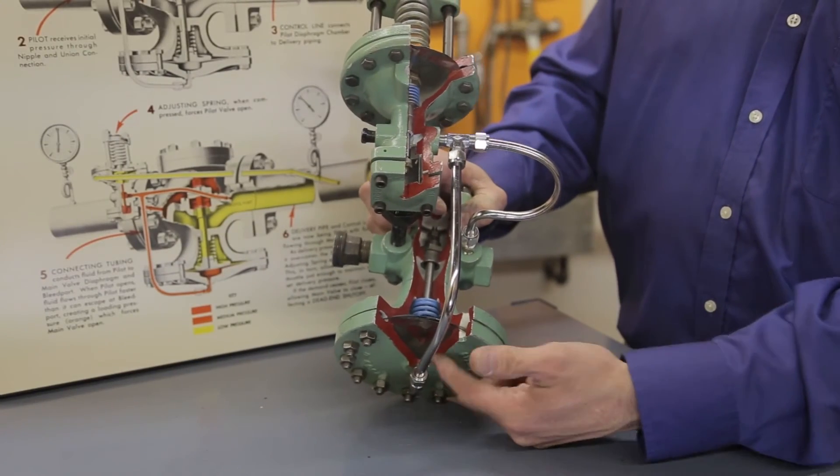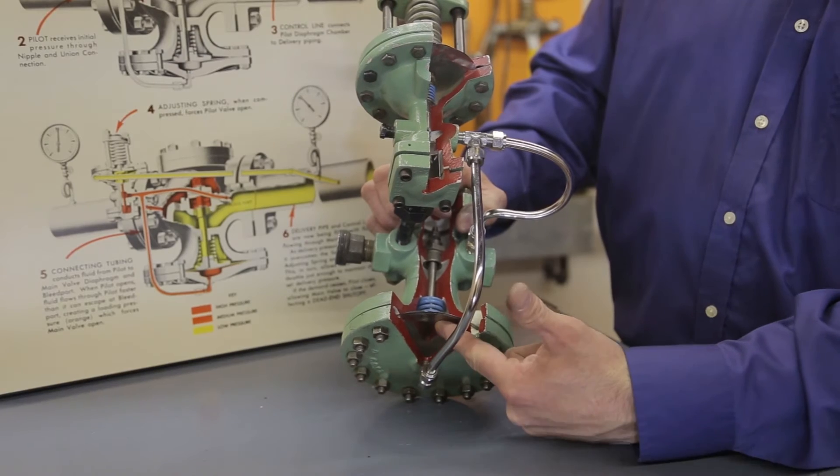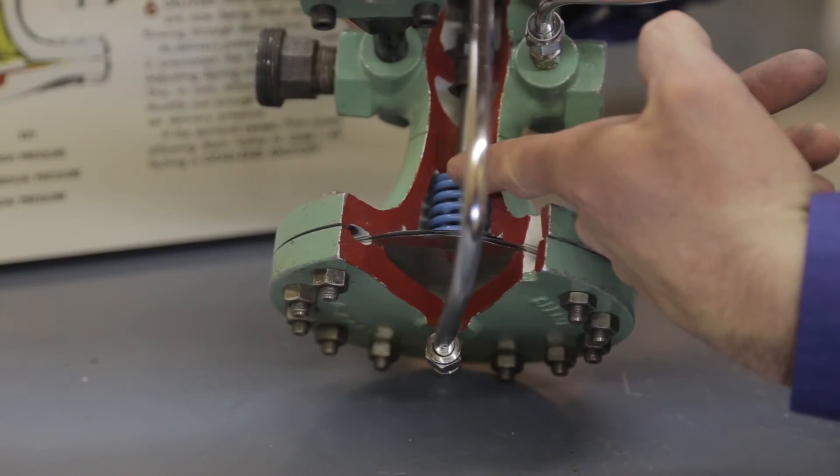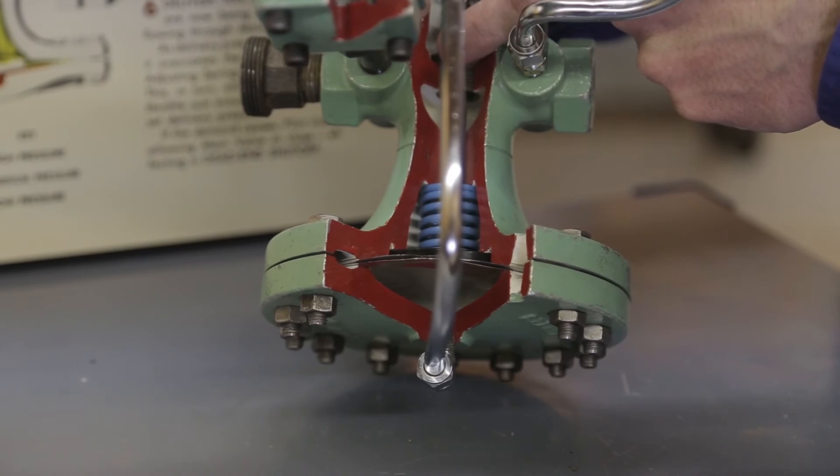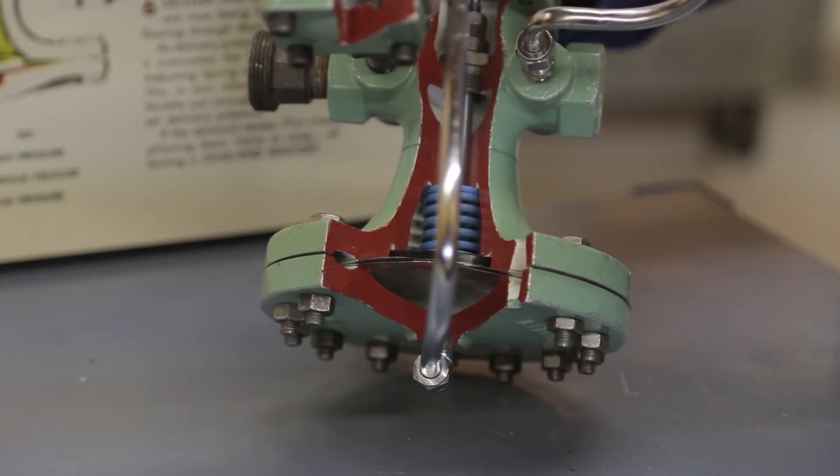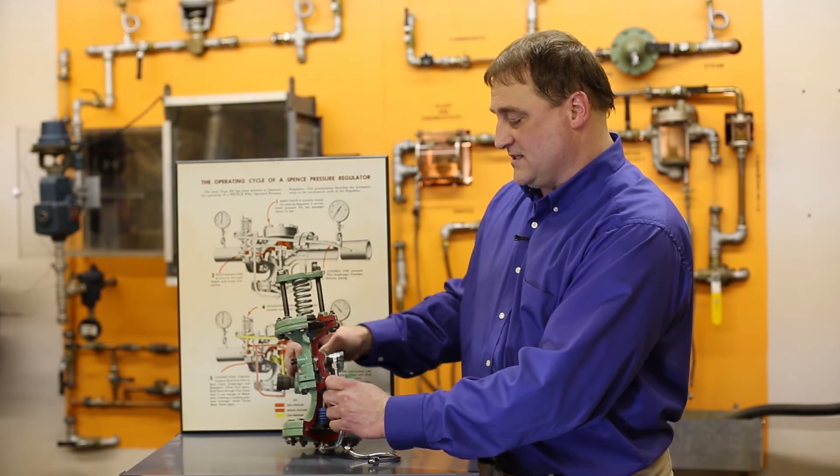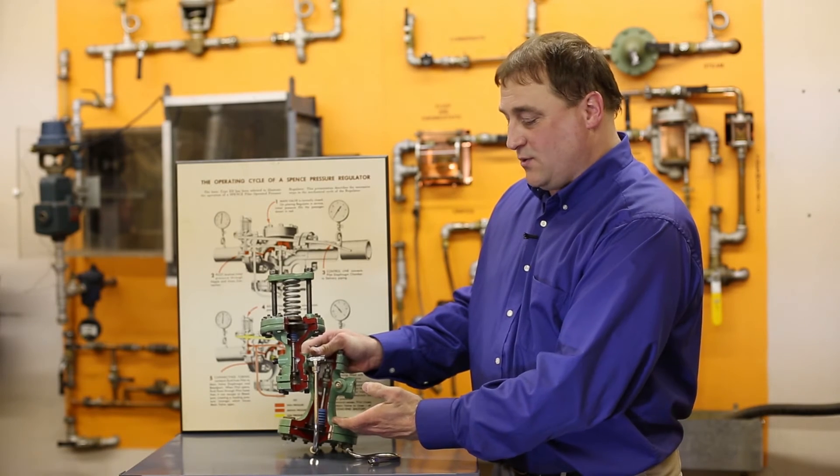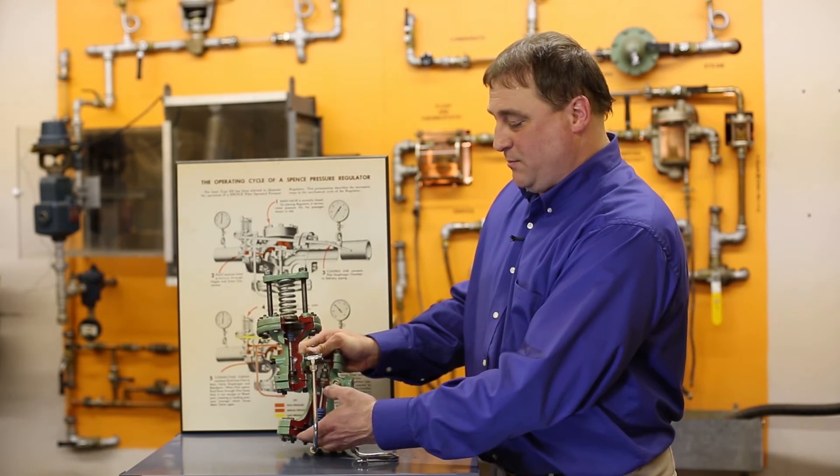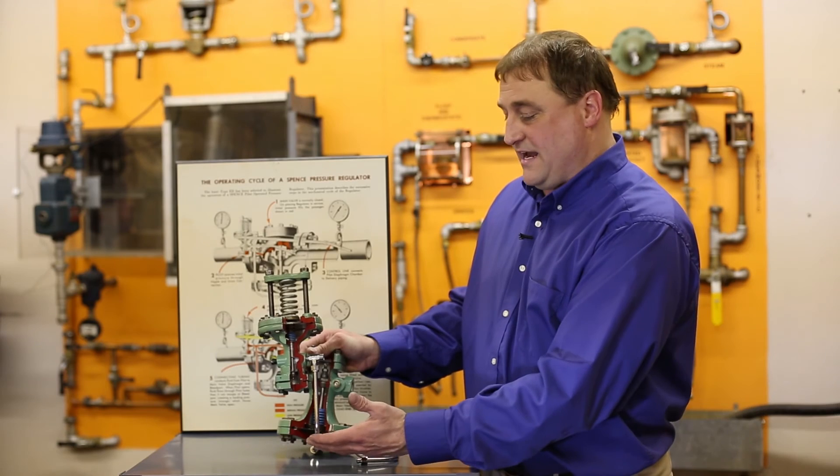Then we have what's called a restriction elbow here. You'll be able to read that we have a restriction port down here. That throttles and controls the amount of fluids that actually stroke the diaphragm. The main valve itself is a fail-closed valve, so we actually have to have a force here to push open this valve through the diaphragm.